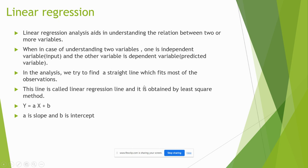In this case we have to understand two variables. One is independent variable, it is nothing but input. Other variable is a dependent variable, it is a predicted variable. This line is called a linear regression line. We have to find this linear regression by using least square method.